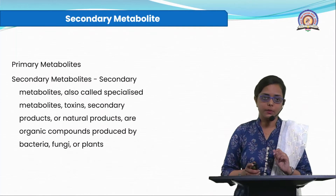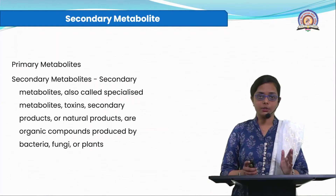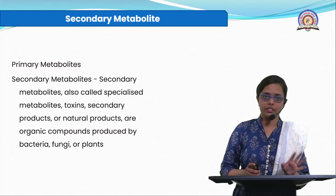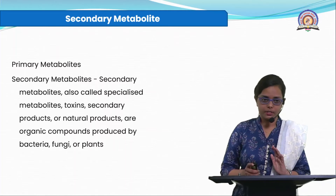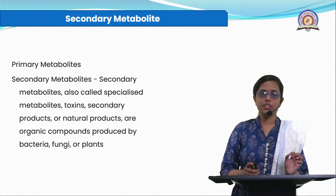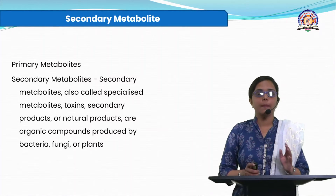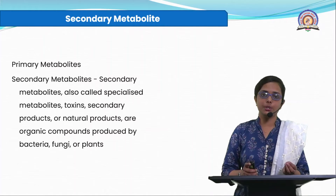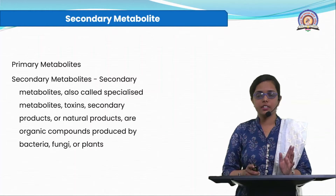Let us discuss secondary metabolites. There are two types of metabolites in plants: primary and secondary. Primary metabolites — carbohydrates, proteins, and lipids — are large macromolecules required in large quantity and essential for growth; if absent, the plant won't grow. Secondary metabolites are non-essential metabolites with accessory duties. They are also called specialized metabolites or natural products — organic compounds produced by bacteria, fungi, or plants — and their primary function is defense against herbivores, insects, and disease stress.